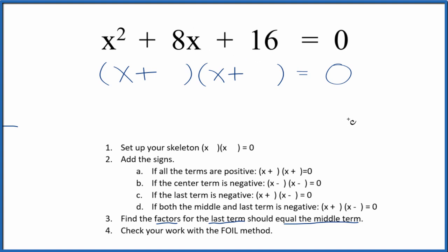2 times 8 would give us 16, but 2 and 8 don't add up to 8. And 4 times 4 equals 16, and that works because 4 plus 4 equals 8. So we're just going to put 4 in here, and this should be correct.